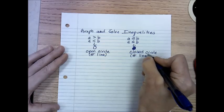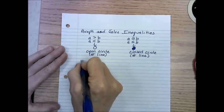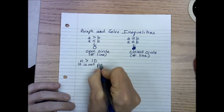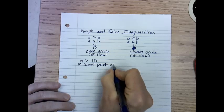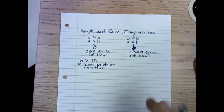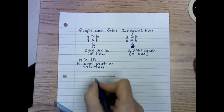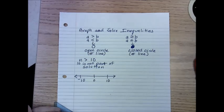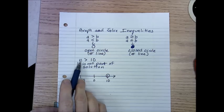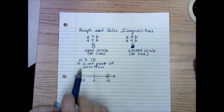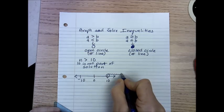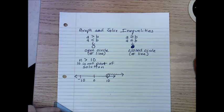Let's review what that means. If we have N is greater than 10, then 10 is not part of the solution. On the graph, we put our 0, our 10, and our negative 10. Since 10 is not part of the solution, we use an open circle. That lets us know that 10 cannot be substituted for N — the statement would be false otherwise. All values for N are greater than 10, so our arrow connected to the circle goes to the right, because that is where the values greater than 10 are.